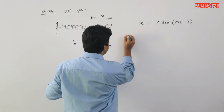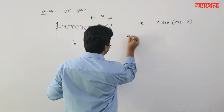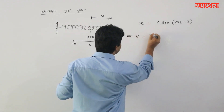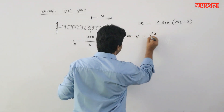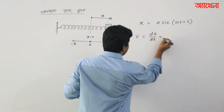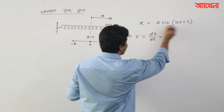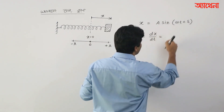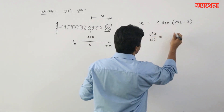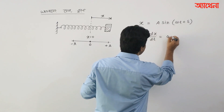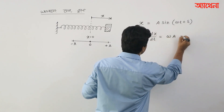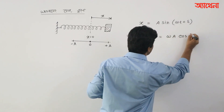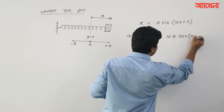What is v-bar? It is just d/dt of x. Even if you need to find out the difference, then we will get omega a cos(omega t + delta).